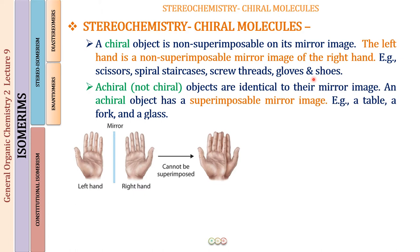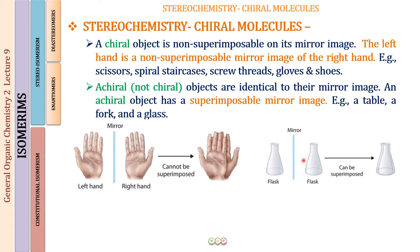More examples of achiral objects: we already saw the flask — its mirror image looks identical, and when we superpose them, they can be superposed completely. Other examples include a table, a fork, and a glass — all achiral objects where the image and the object are superposable on each other.